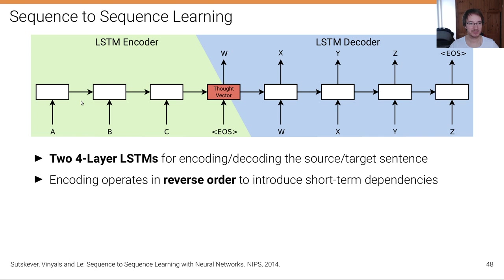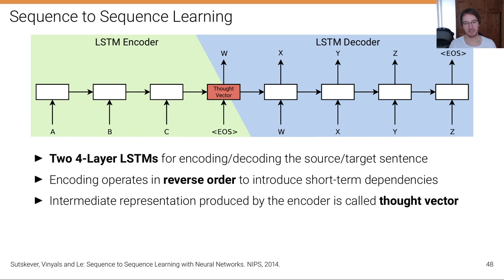By reversing the input sentence you get shorter dependencies, because the first word in the input is likely related to earlier words in the output. It's otherwise a simple LSTM that processes these reverse-ordered words word by word. The words are embedded in a distributed word representation and there's a hidden state carried forward through the recurrent neural network. There's an intermediate representation called the thought vector, which stores the meaning of the sentence to be translated.